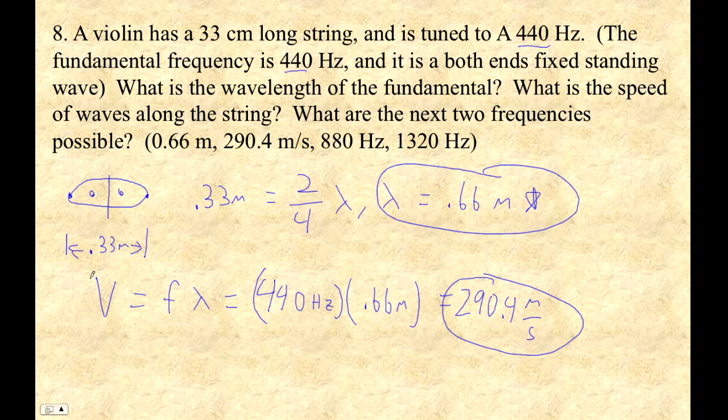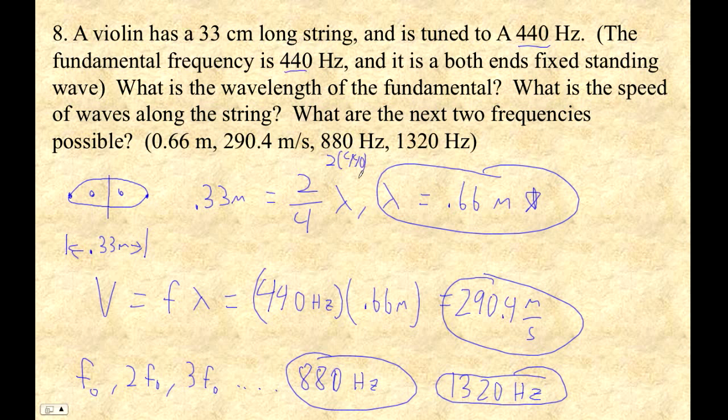Now, since it's both ends fixed, the way these things go is they go the fundamental frequency, and then twice the fundamental frequency, three times the fundamental frequency, etc. So the next frequency would be two times the fundamental. So twice 440 is 880. And then three times, so that'd be the next frequency. And then three times 440 is, well, 1200 plus 120. So that'd be 1320 Hertz. So this is two times 440. This would be three times 440.